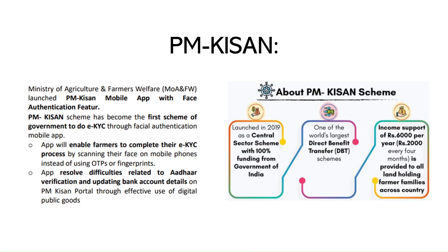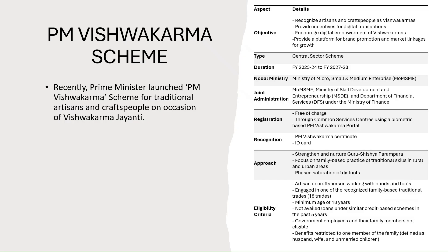PM-KISAN is a Central Sector Scheme launched in 2019, meaning full funding comes from the Union Government. It provides financial assistance of ₹6,000 per year in three equal installments of ₹2,000 to each farmer. Recently, an eKYC through face authentication feature was introduced in the PM-KISAN app.